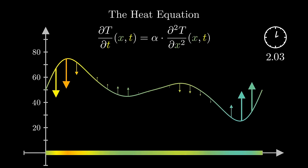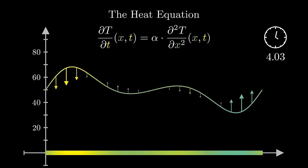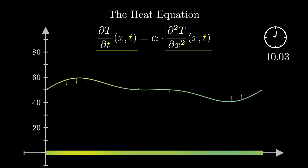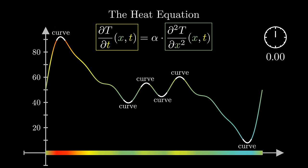The heat equation is written in terms of these partial derivatives. It tells us that the way this function changes with respect to time depends on how it changes with respect to space. More specifically, it's proportional to the second partial derivative with respect to x. At a high level, the intuition is that at points where the temperature distribution curves, it tends to change more quickly, in the direction of that curvature.